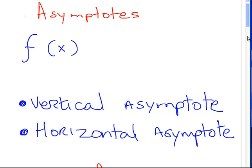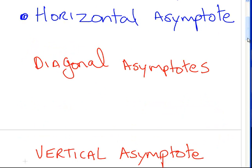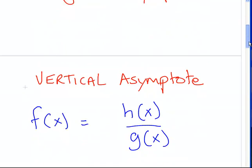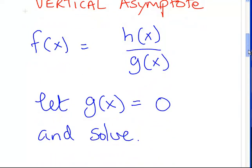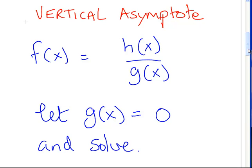There are also such a thing as diagonal asymptotes. But in the first instance, what I'm going to do first off is look at vertical asymptotes.